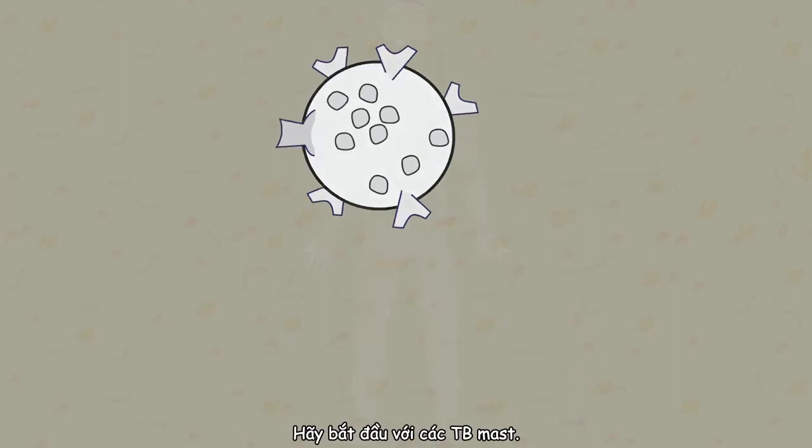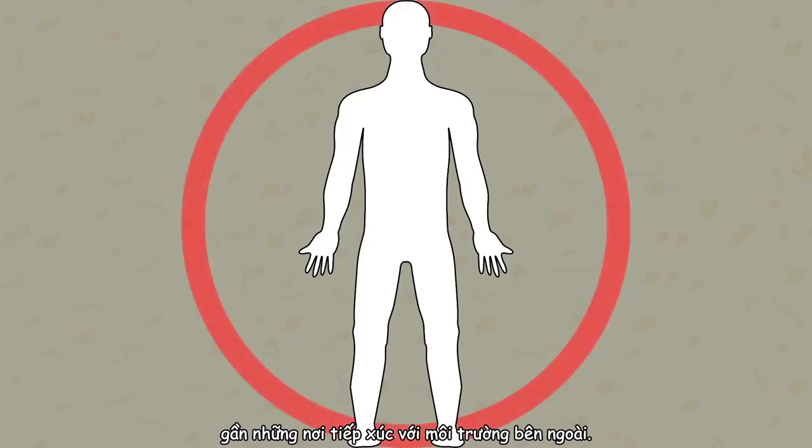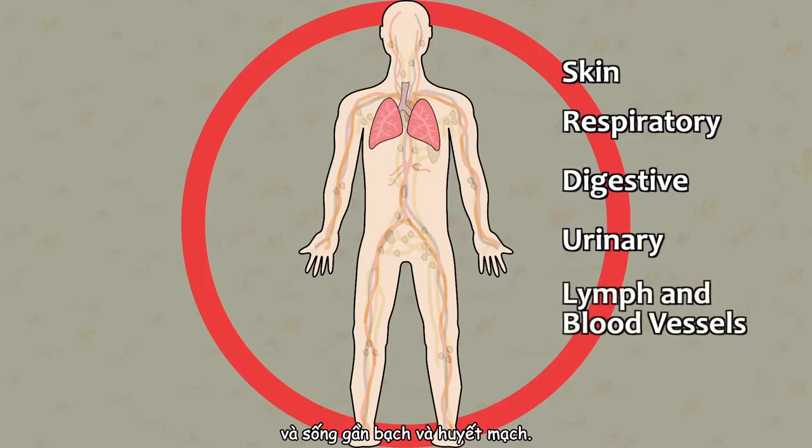Let's begin by looking at the mast cell, which is found throughout the body, close to areas exposed to the outside world. They live under the skin, in the respiratory system, in the digestive tract, urinary tract, and they live near lymph and blood vessels.